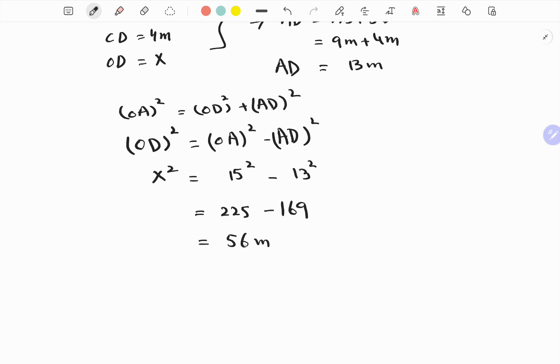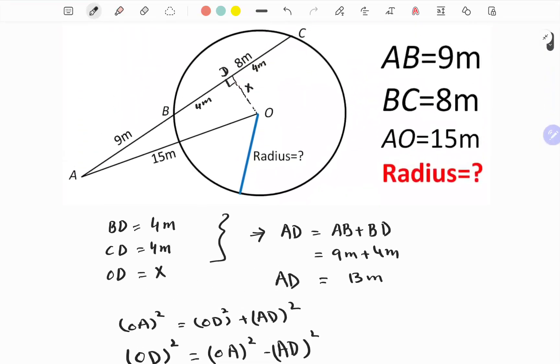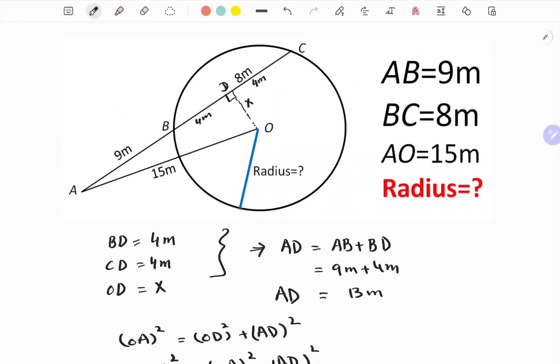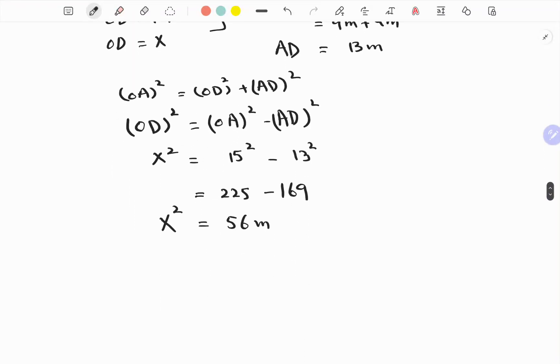Now we draw a line segment from O to C. Since OC is the radius of this circle, so let we call it as capital R. Then again, ODC is a right triangle with OC that is equal to capital R as its hypotenuse.